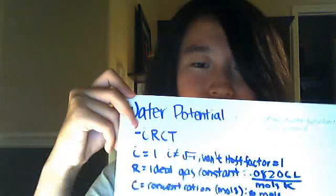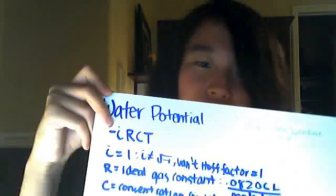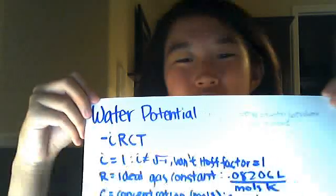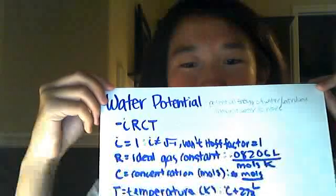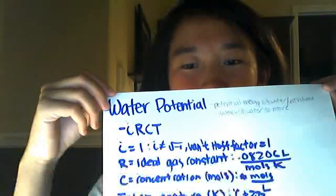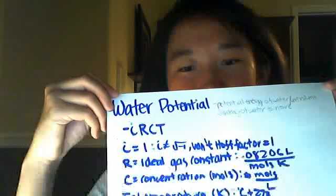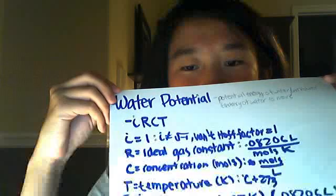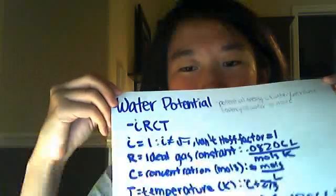Negative iRCT is the formula for water potential. i being 1, which is Van't Hoff's factor — a constant that equals 1. R is the gas constant, 0.08206 liters per moles Kelvin. C is concentration in moles per liter, and T is temperature in Kelvin, which is Celsius plus 273.